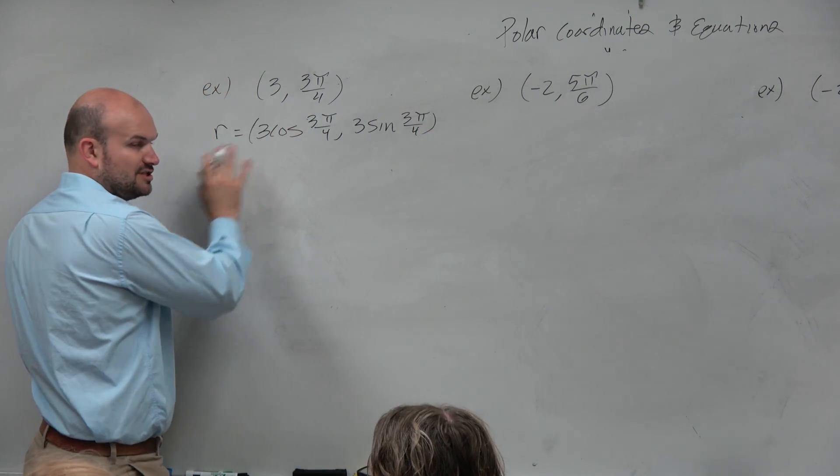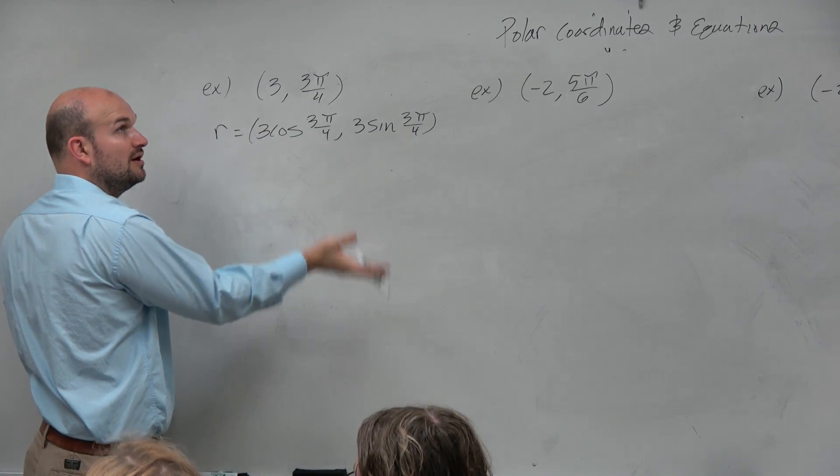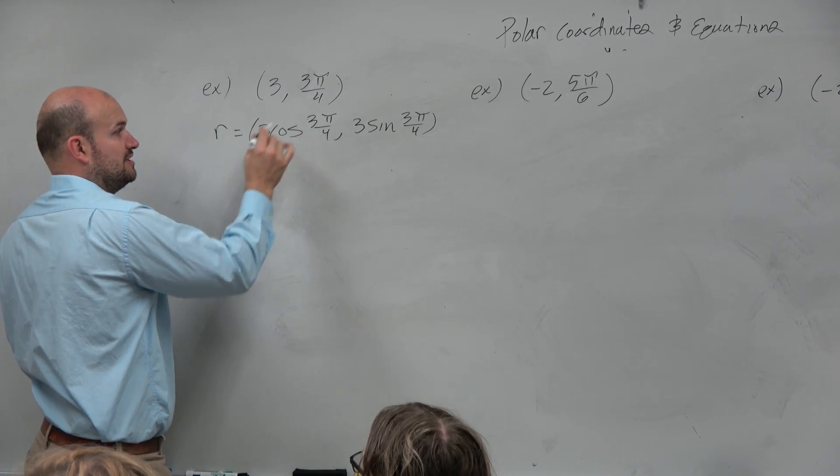Now again, just a little FYI, I just wanted to kind of go through this for you guys. So cosine of 3 pi over 4, let's see, guys, that's in the second quadrant. That's square root of 2 over 2.